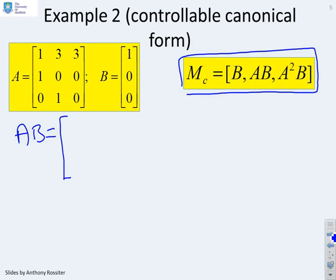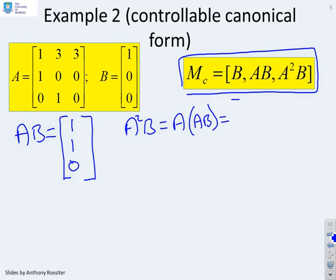So AB is going to be given by 1, 1, and 0. And now, let's work A squared B, which you'll notice the easiest way to calculate this is A times AB, because you already know AB. So A times AB is going to give us 4, 1, and 1.